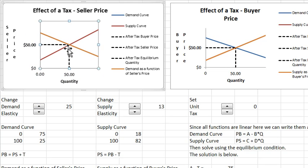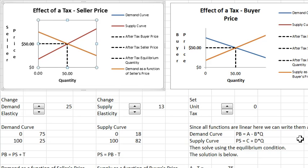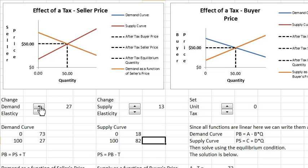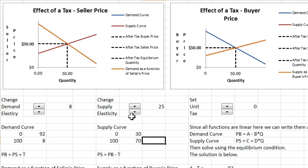The equilibrium doesn't change, but the elasticity of demand changes. You can increase elasticity or you can decrease elasticity of demand at the equilibrium. You can also change the elasticity of supply. You can make supply more elastic or you can make supply less elastic at the equilibrium.